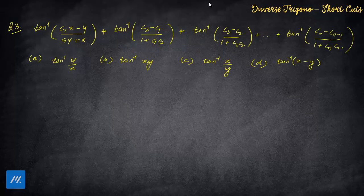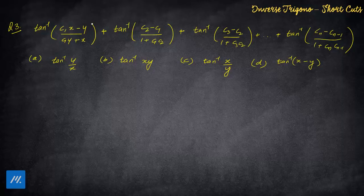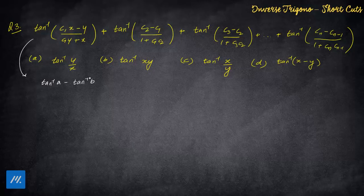Moving to the next problem: tan inverse series are very famous in competitive exams. In this question, c1, c2, c3, ..., cn are parameters and x, y are also present. We know such questions are normally solved by breaking them into tan inverse(a) − tan inverse(b) form. But notice the answers are not dependent on any of c1, c2, c3, ..., cn.